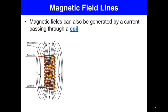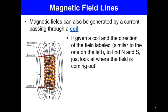Magnetic fields can also be generated by a current passing through a coil of wire. If given a coil with the direction of the field labeled, similar to the one on the left, to find the north-south just look at where the field is coming out of. The side it comes out of is the north side, and the one it goes into is the south.